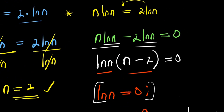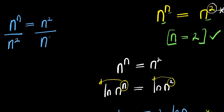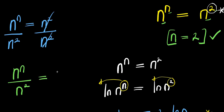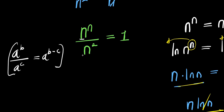Now let's solve this whole equation using another method. We have n power n equals n power 2. I divide both sides by n power 2. Since a power b divided by a power c equals a power b minus c, and the bases are the same, we subtract the exponents to get n power (n minus 2) equals 1.